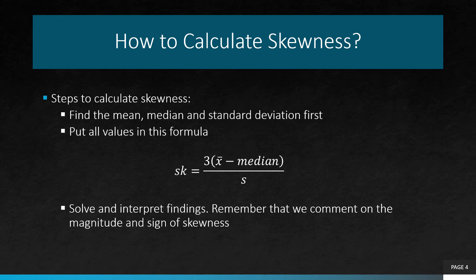Now, let's take a look at the steps to calculate skewness using the Pearson method. First, we need to find the values of the mean, median, and the standard deviation.